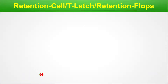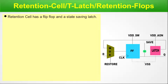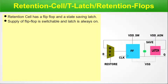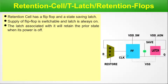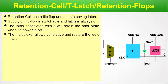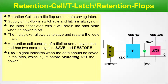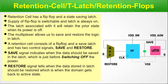Retention cell — also called T-latch or retention flop — these are different names for the same thing. A retention cell has a flip-flop and a state-saving latch. The supply of the flip-flop is switchable and the latch is always on; the latch retains the prior state when power is off. The multiplexer allows us to save and restore the logic in the latch. A retention cell has two control signals: save and restore. The save signal indicates when data should be saved in the latch, just before switching off the power domain. The restore signal tells when the data stored in the latch should be restored, which is when the domain becomes active again.